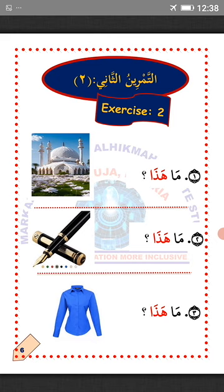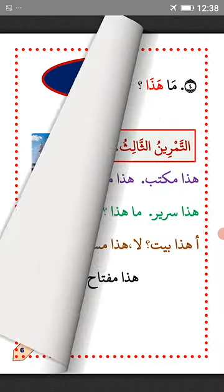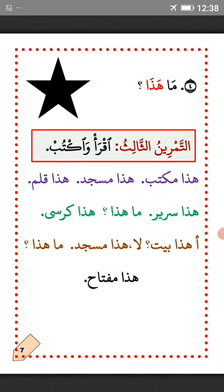La'alaka fahimti? I hope you understand. MashaAllah. Arba, number 4: Mahatha — what is this? So how do you say 'this is a star' in Arabic? At-tamrinu al-thani — the third exercise.